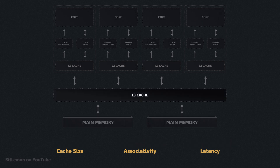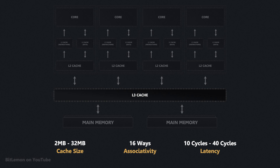L3 caches are the largest in the hierarchy in most architectures, ranging from 2MB to 32MB per core, with some Apple and AMD CPUs having more than 32MB per core. L3 typically has an associativity of 16 ways, though this can vary between system architectures. It has the longest latency, ranging from 10 to 40 cycles.